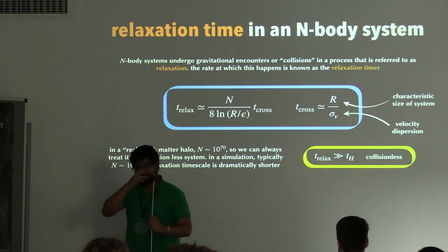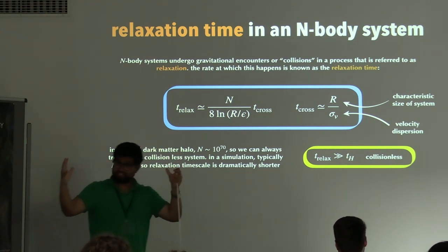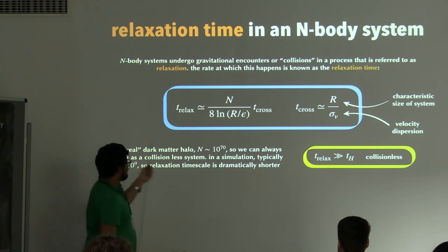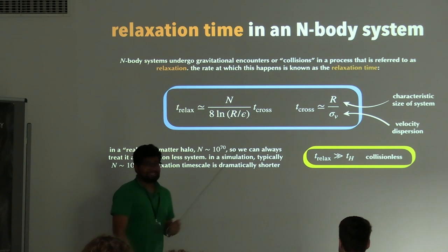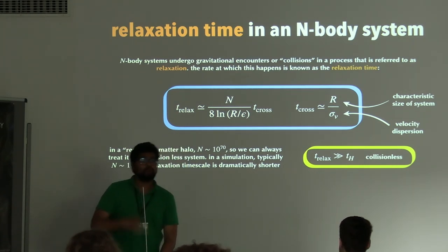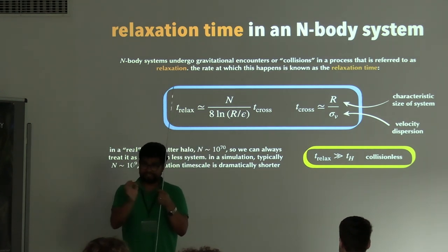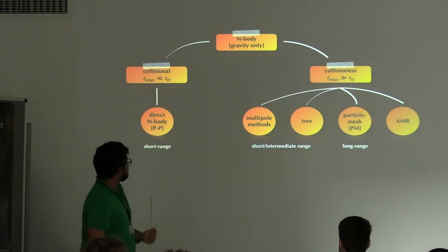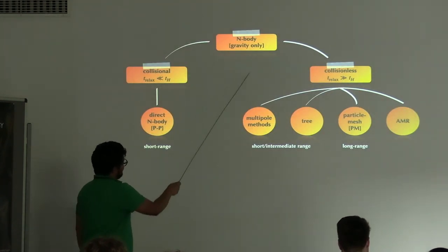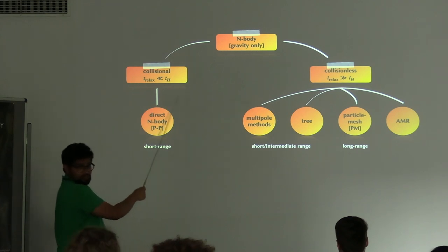This contrasts with globular clusters — very dense collections of stars — where even with large N, the small system size means relaxation times shorter than the Hubble time, making them collisional systems requiring different N-body techniques. N-body simulations therefore split into two regimes: collisional systems (like globular clusters) and collisionless systems (dark matter, large-scale structure), depending on which limit you're in.